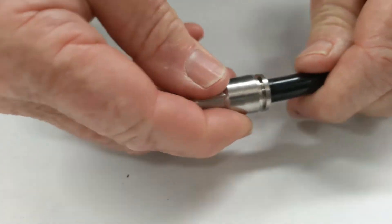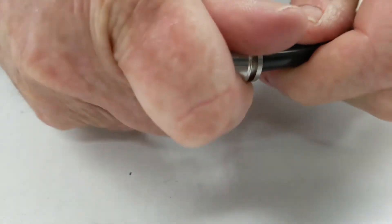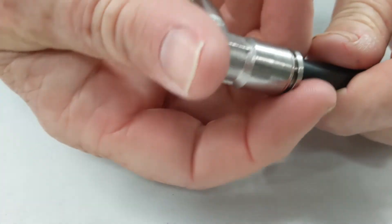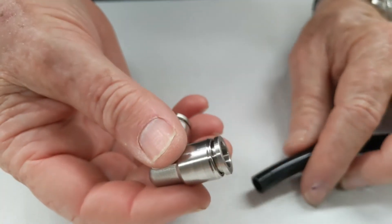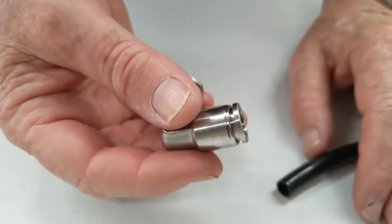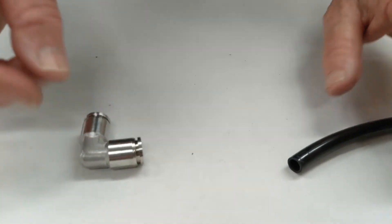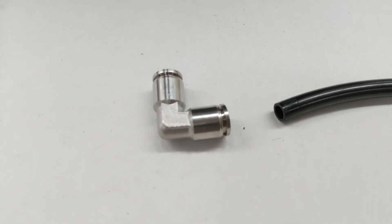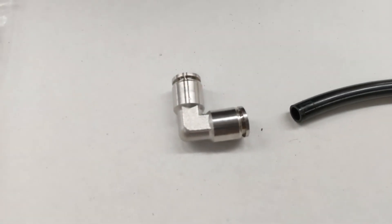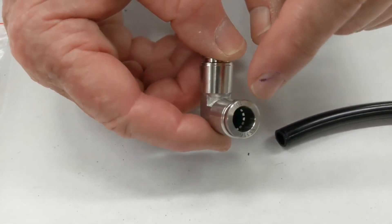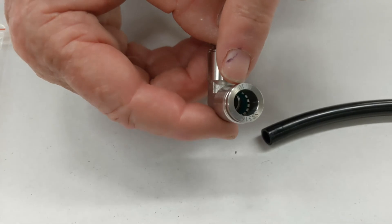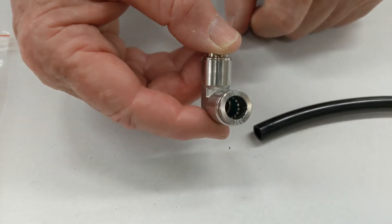To release it, pull the collet back and pull the tube out. This seals around the actual tube itself. The tube size is engraved onto the front of the collet.